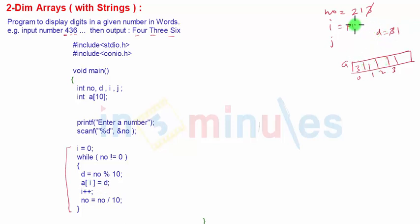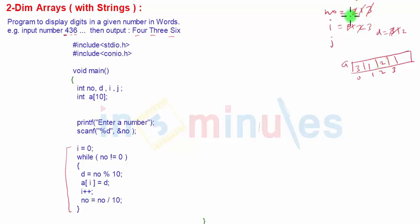I++ makes I = 2, then number divided by 10 reduces number to 2. Since number is not 0, digit D = 2, stored in a[2]. Then I++ makes I = 3, and number divided by 10 makes number = 0. The loop stops because the condition is that number should not be 0. So we have stored the digits in reverse order: 3, 1, 2. Now we read this in reverse order, and here I has stopped at 3, which is one step ahead of the last stored element.